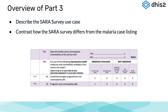In part three of this overview, we are going to describe the Service Availability and Readiness Assessment use case. In particular, we will describe some of the differences between the SARA survey and the malaria use case.